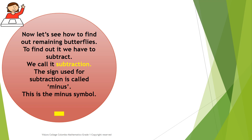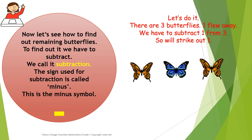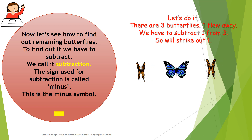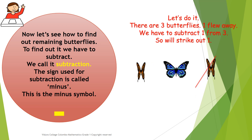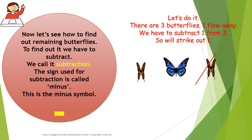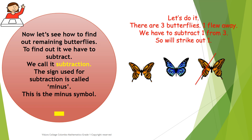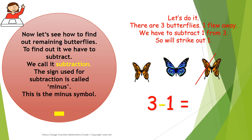Let's do it. There are three butterflies, one flew away. So, we have to subtract one from three. We'll strike out one. Now, count the remaining butterflies. One, two. Two butterflies are remaining in the garden.